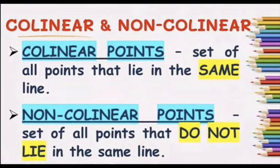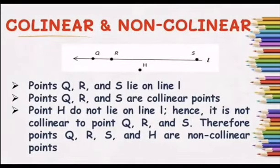The next defined terms are collinear and non-collinear points. Collinear points is a set of all points that lie in the same line. Non-collinear points is a set of all points that do not lie in the same line. Example: points Q, R, and S lie on line L. Points Q, R, and S are collinear points. Point H does not lie on line L. Hence, it is not collinear to points Q, R, and S. Therefore, points Q, R, S, and H are non-collinear points.